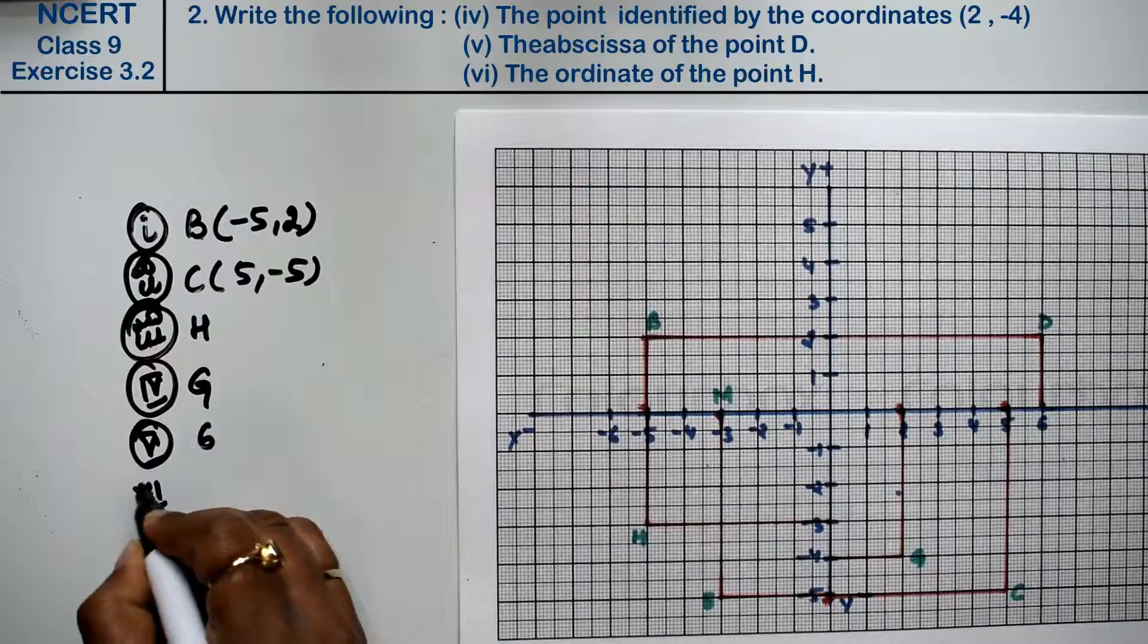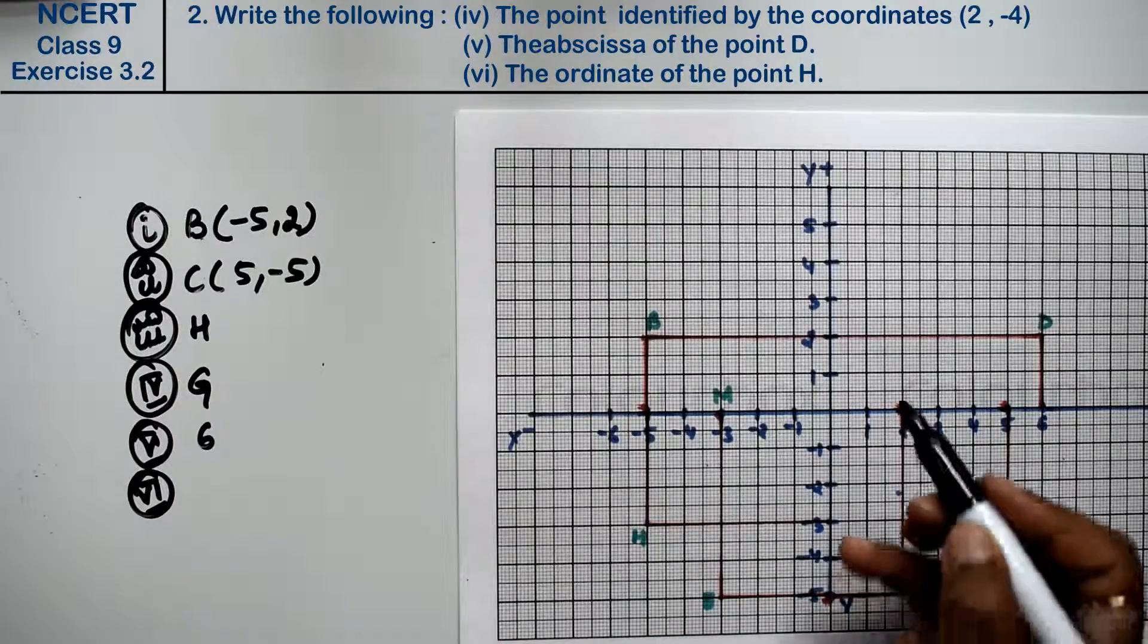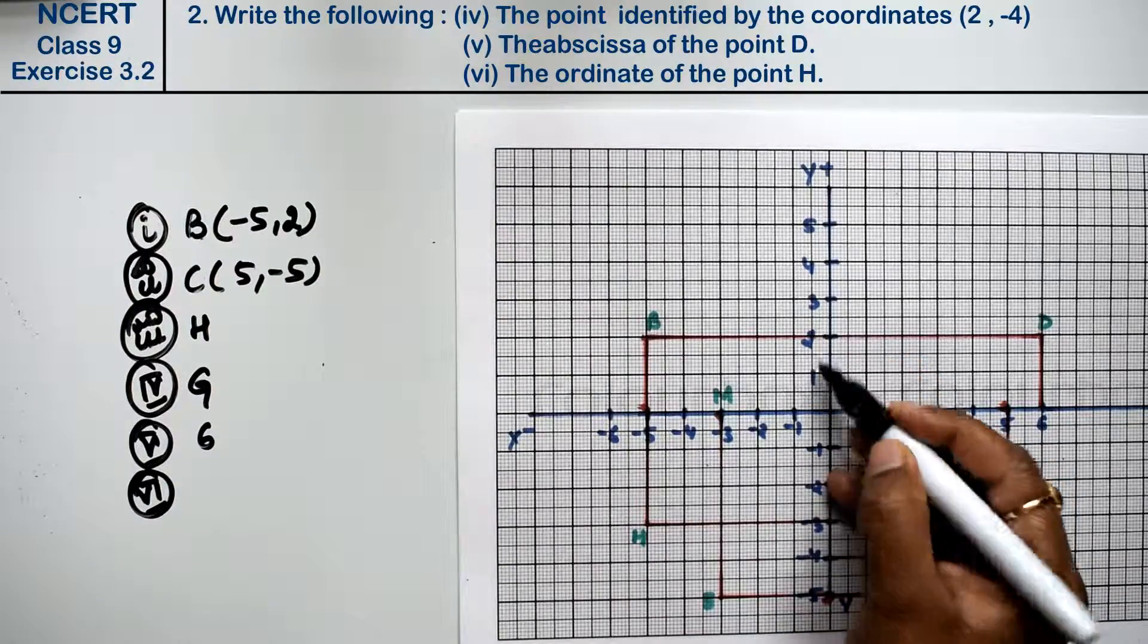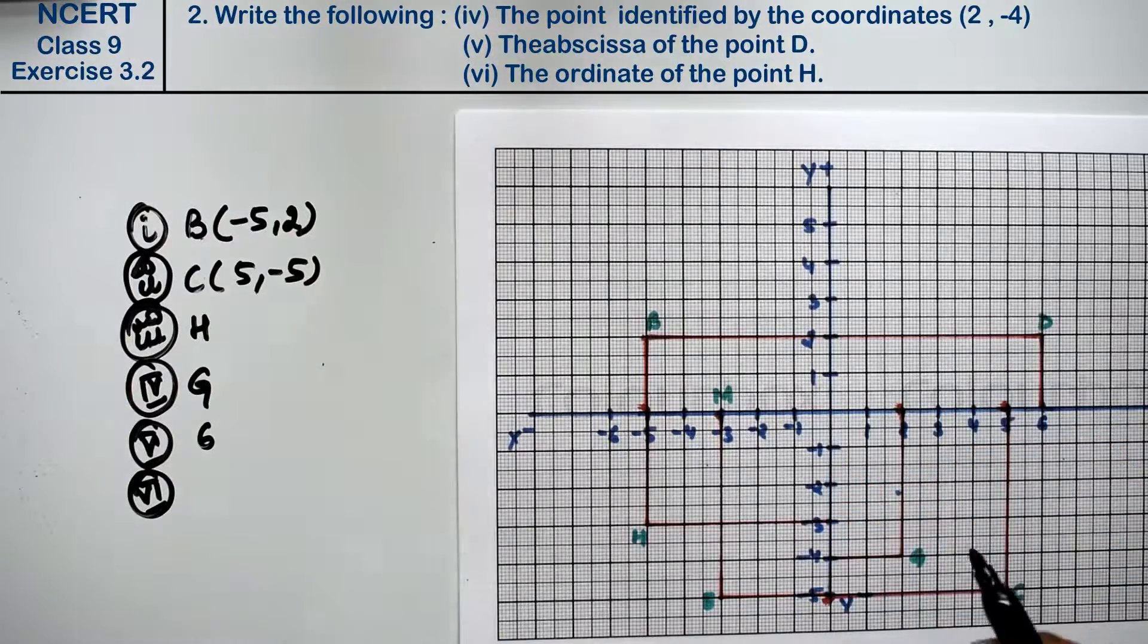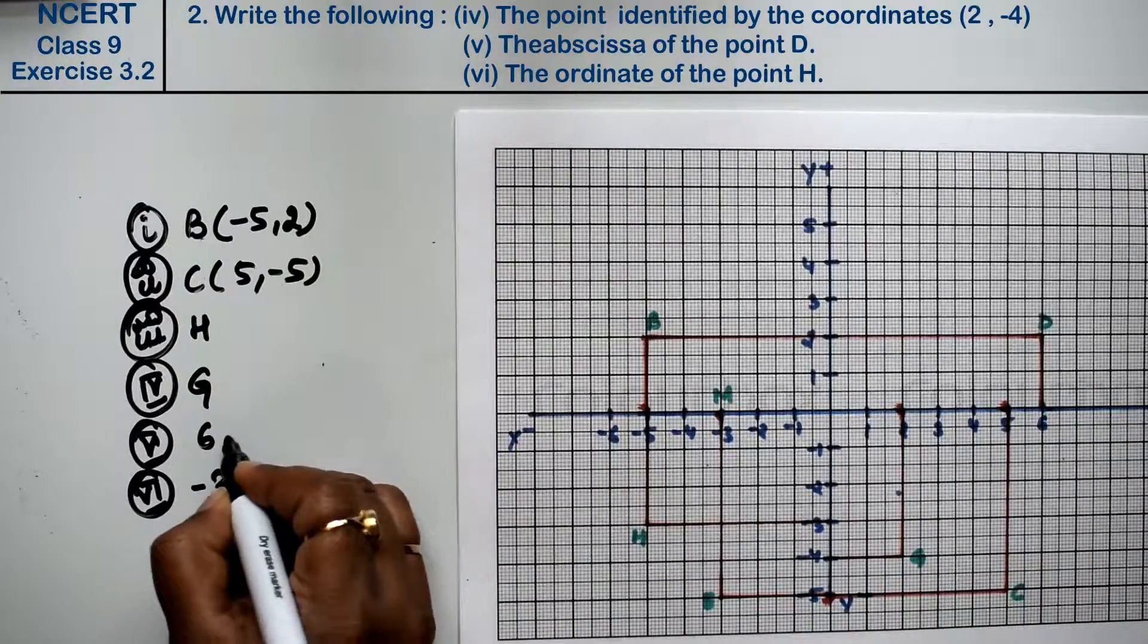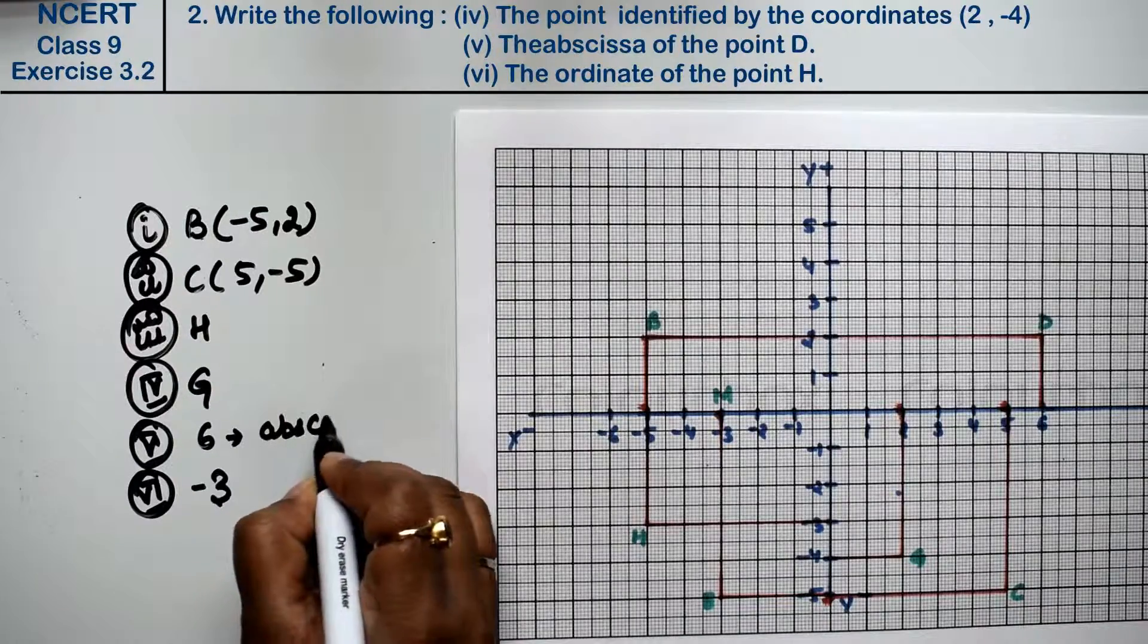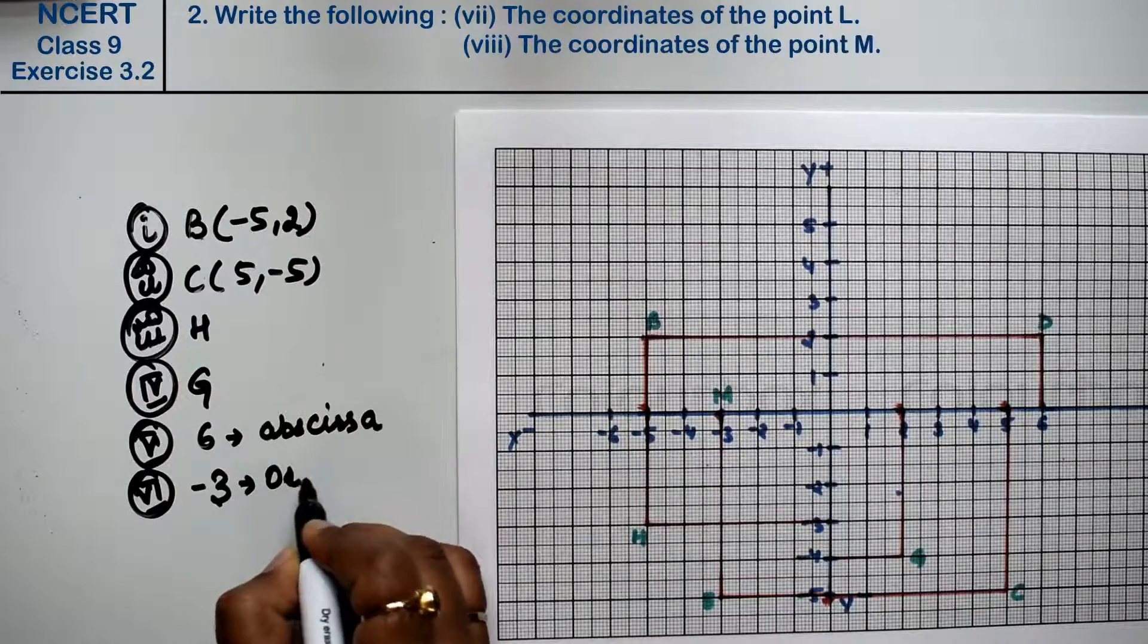Sixth part is the ordinate of the point H. The ordinate means the y-axis value. Which axis is the ordinate? Point H. The ordinate means this axis, so the answer is minus 3. And this is the coordinate.